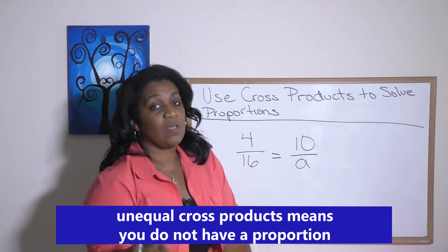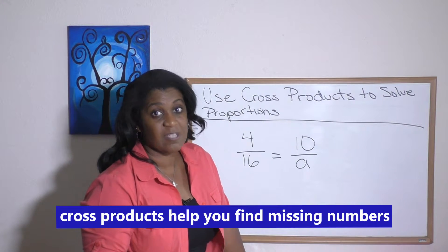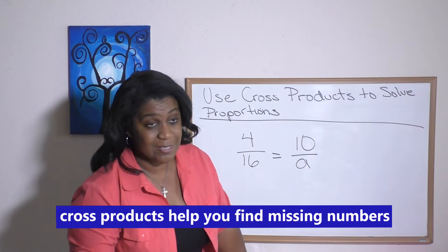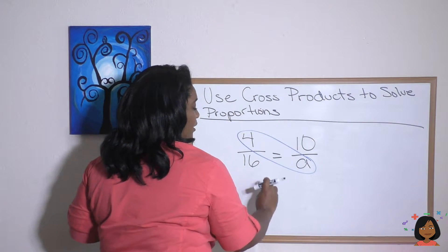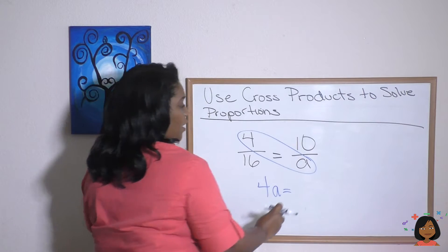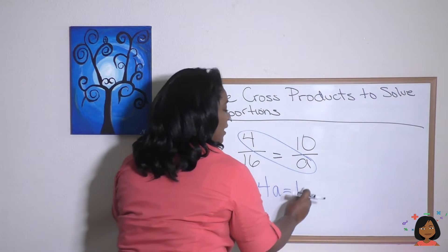So how is this useful? Well, when we have a missing number, we can use cross products to see what the missing number is. Take a look. Here, if we multiply four times A, we're going to get 4A. If we multiply 10 times 16, we're going to get 160.